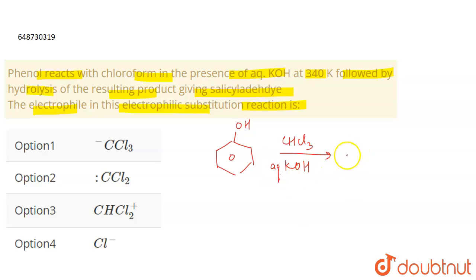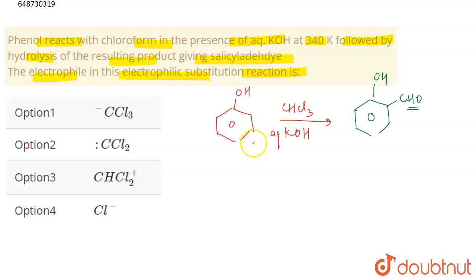Aqueous KOH... the product that is formed here in this case is actually salicylaldehyde with OH and CHO group. This is what we get. Now if you talk about the mechanism, what is the electrophile that is involved here?